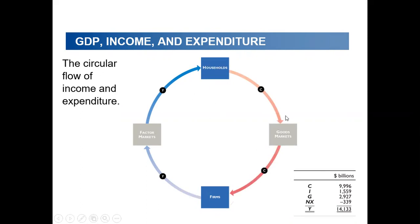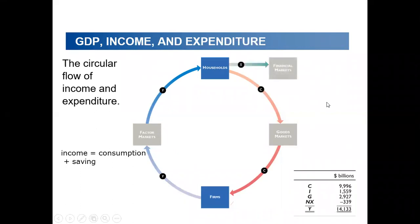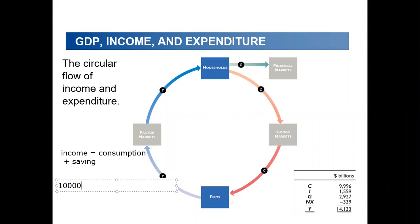In this cycle, income exactly equals expenditure or spending. Income includes consumption plus saving — not all income is spent on consumption; part goes to saving. For example, if income is $100, $70 goes to consumption and $30 to saving. Using the numbers in our example, income is $10,000, consumption is $9,996, and the remaining $4 goes to saving.